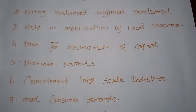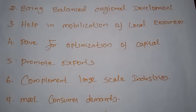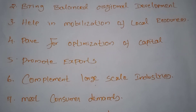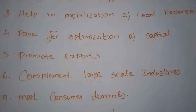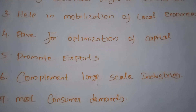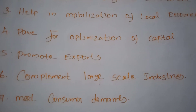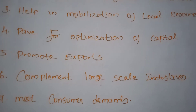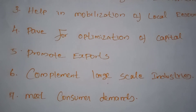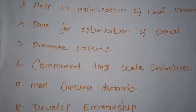Next, small-scale industries pave the way for optimization of capital. They require less capital per unit of output and provide quick returns on investment due to a shorter gestation period — the payback period is quite short. Compared to large-scale industries, small-scale industries require a small amount of capital, which can be derived from local savings, money lenders, and specialized financial institutions. They function as a stabilizing force by providing a high output-to-capital ratio as well as a high employment-to-capital ratio.